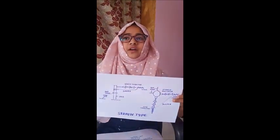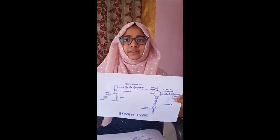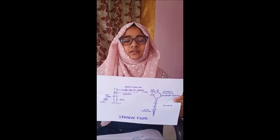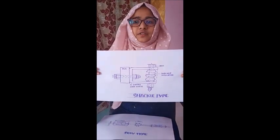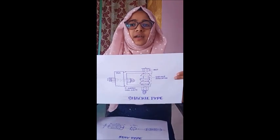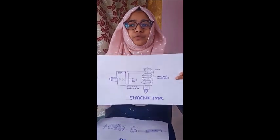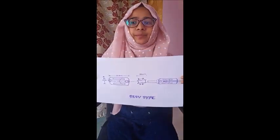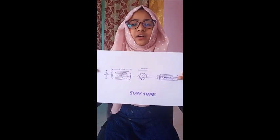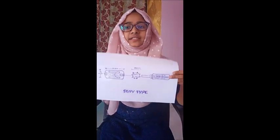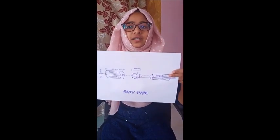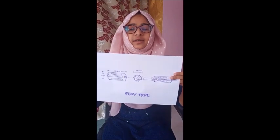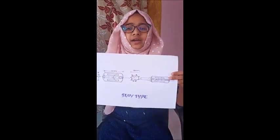Third is strain insulator, used when there is a dead end of the line, or the line is at a sharp curve, or crossing a river. Fourth is shackle type insulator, also called spool insulator, used for low voltages. These can be used in horizontal or vertical positions and are round in shape. Fifth is stay type insulator, also called YGG type insulator. In case of low voltage lines, stays must be insulated at a height of not less than 3 meters. These are used with stay clamps to create insulation.